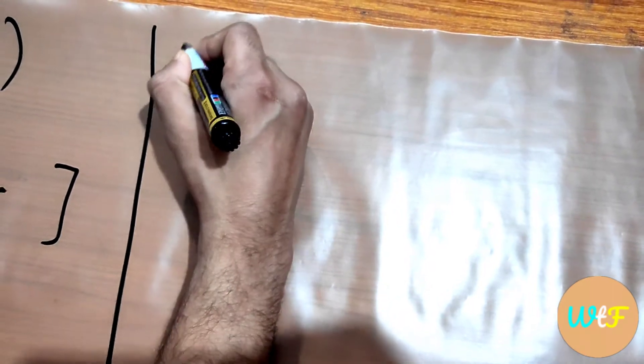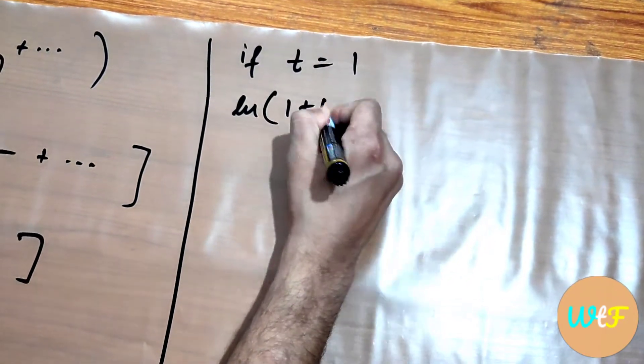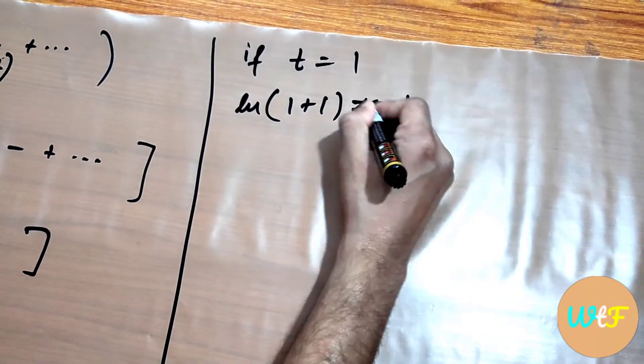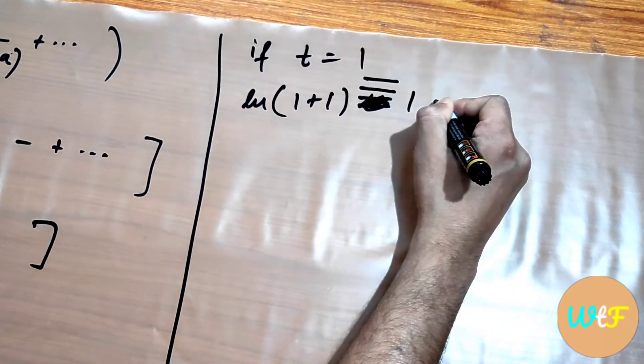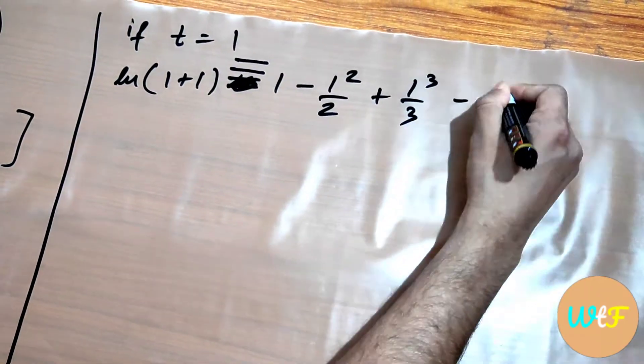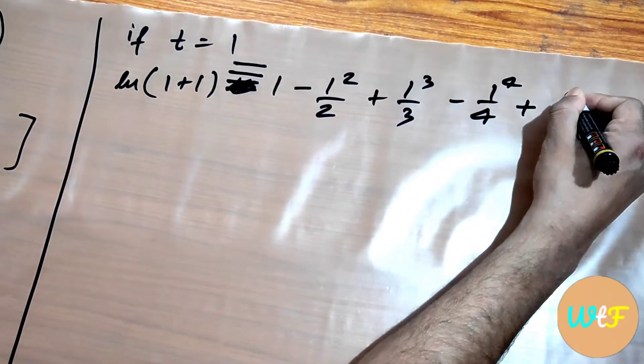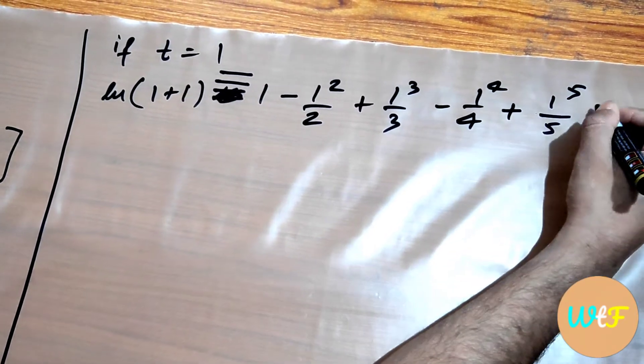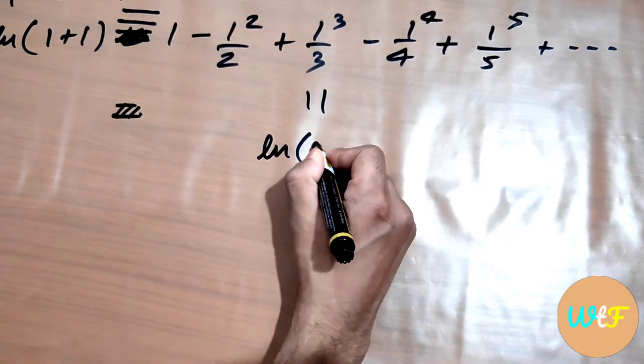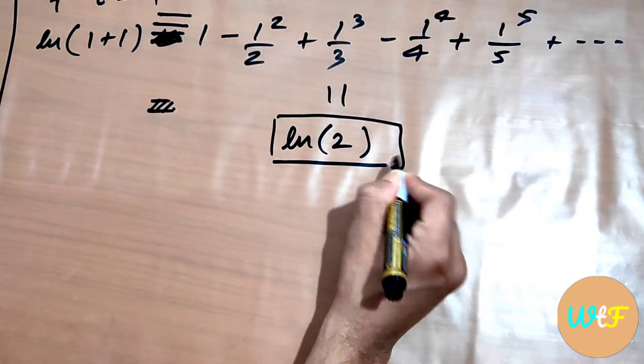I think you have already guessed that if t is 1, so log of 1 plus 1 will be, it is equal to 1 minus 1² by 2 plus 1³ by 3 minus 1⁴ by 4 plus 1⁵ by 5 and so on. So our series which we wanted to calculate converges to natural log of 2.